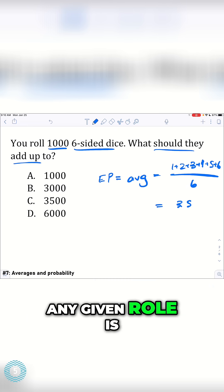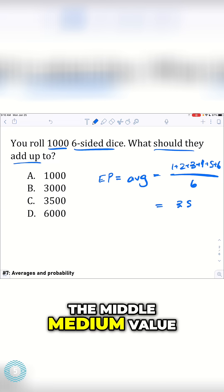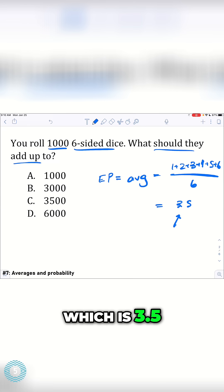So the average of any given roll is going to be just the middle, medium value, which is 3.5.